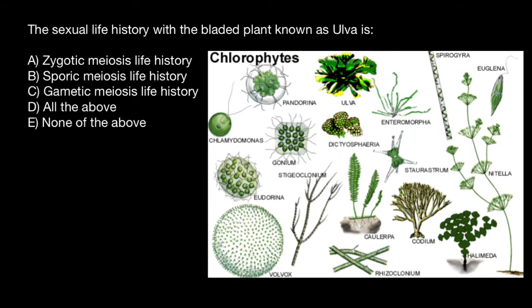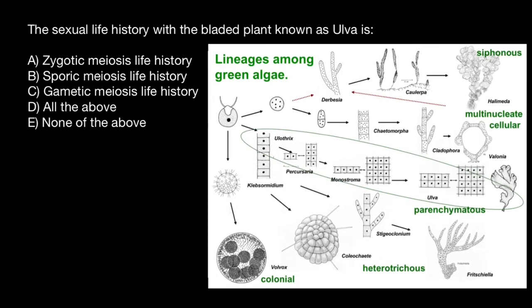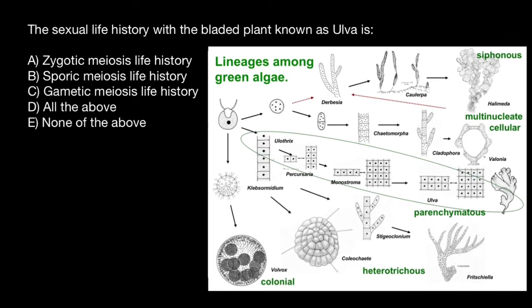Ulva belongs to the green algae. Here you can see different representatives of green algae, and Ulva is one of them. On this picture you can see different lineages, starting with Chlamydomonas, which is the most primitive green algae — unicellular and flagellated — and one of the lineages shown here is Ulva.